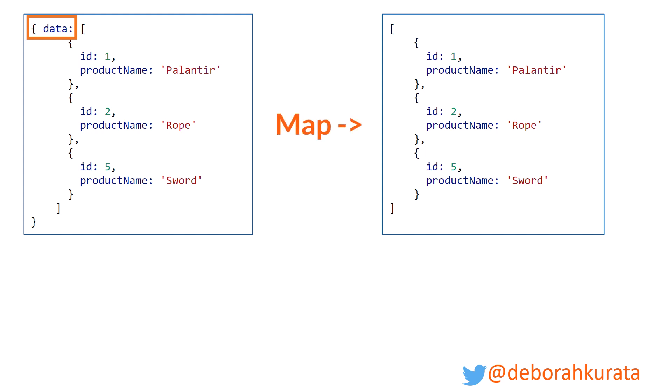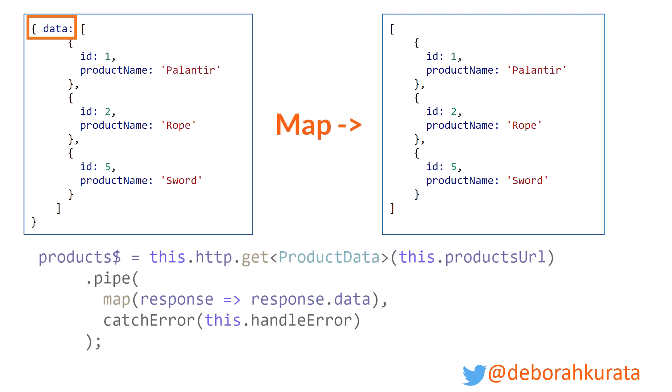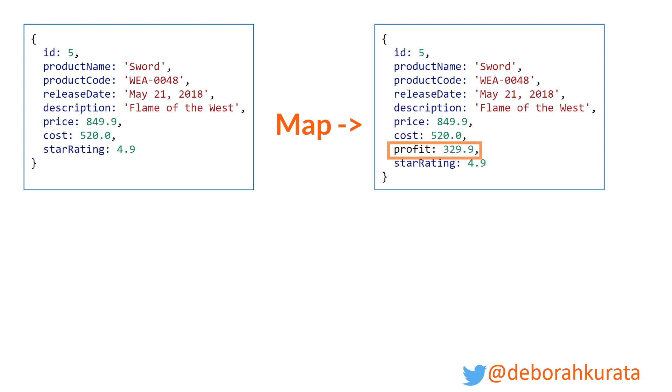We're going to use an HTTP GET to get the data and then just map the response we're getting — which is the data on the left there — and we only want the data property's values, which is our array.